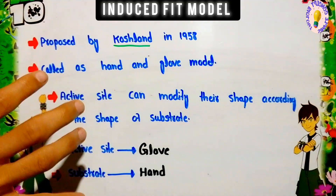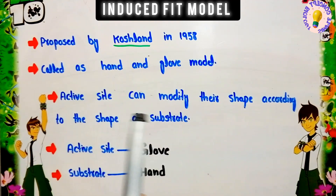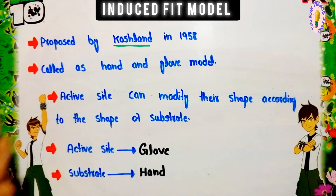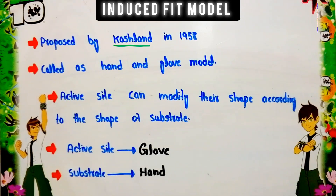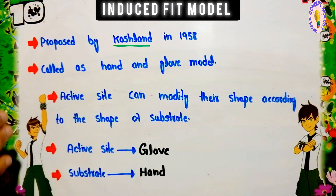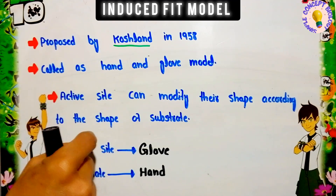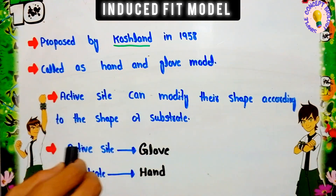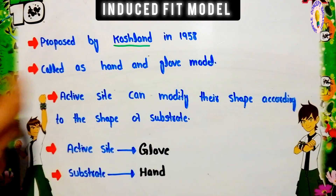The statement of the induced fit model is that the active site can modify its shape according to the shape of the substrate. This means the active site of the enzyme is flexible and modification occurs according to the shape of the substrate. In the lock and key model we relate the substrate and enzyme as a lock and key, whereas in this model we relate the active site and substrate as a glove and hand — the active site acts as the glove while the substrate acts as the hand.